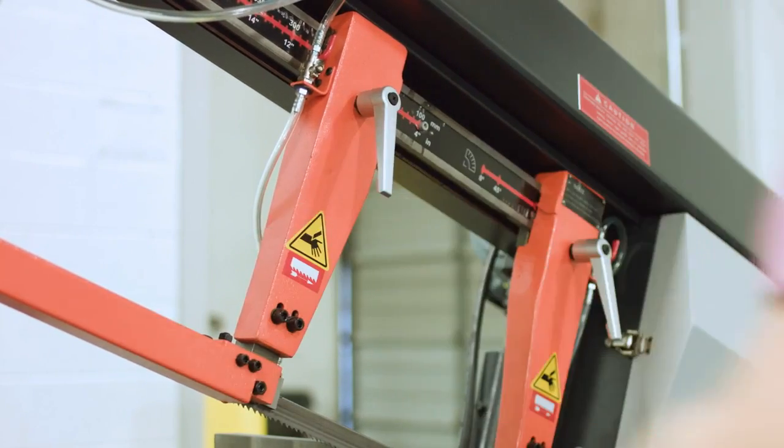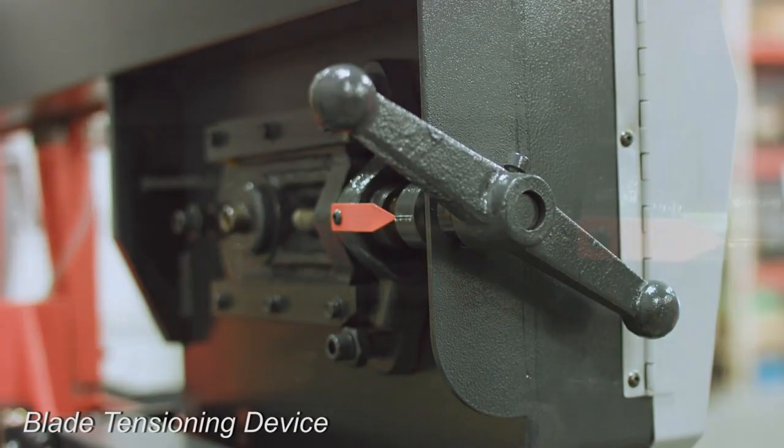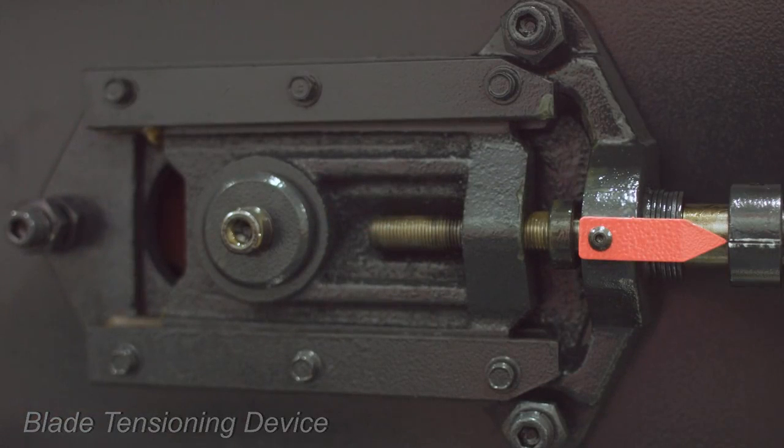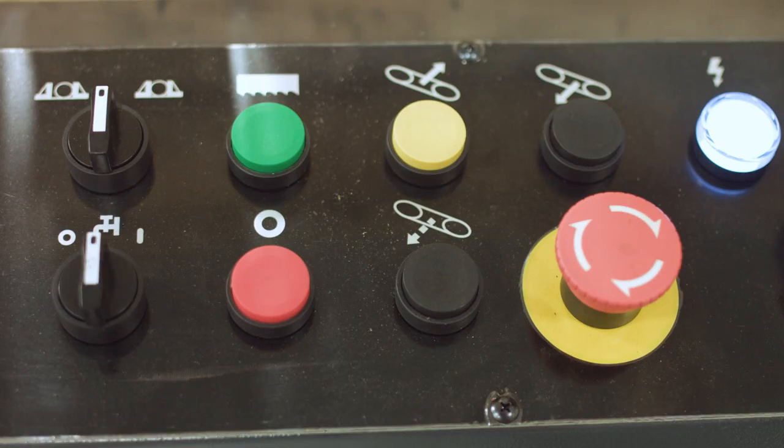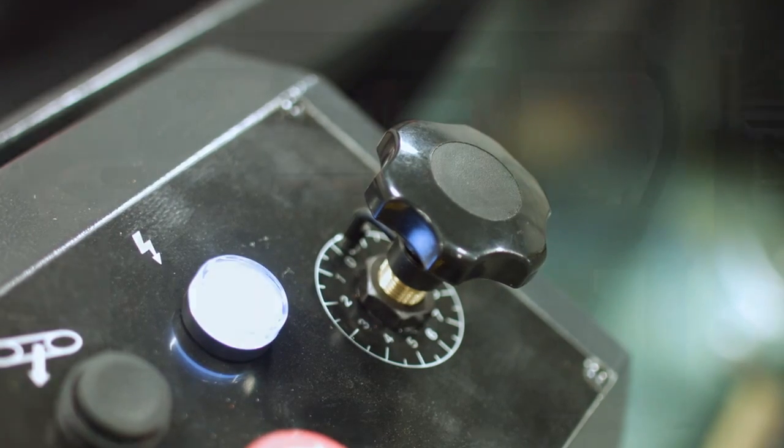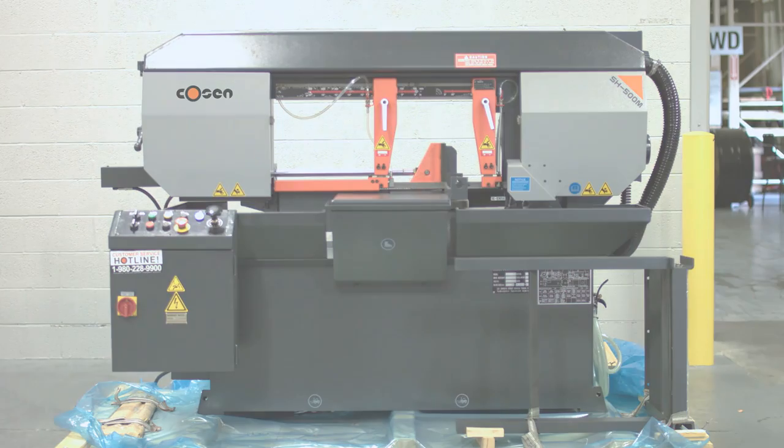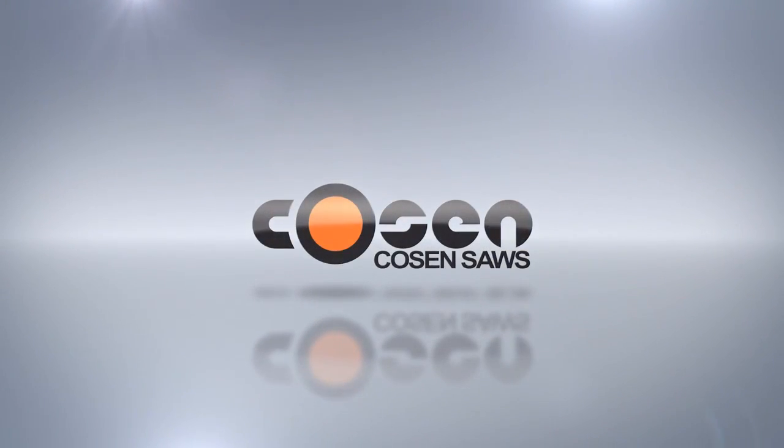With its rigid design and a maximum footprint of 107 inches long by 74 inches wide, the SH500M is perfect for smaller to medium-sized fabrication shops that miter cut tubing, channel, and beams.